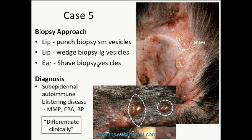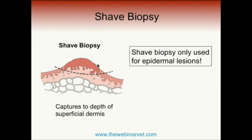The diagnosis by biopsy is a subepidermal autoimmune blistering disease, with the most likely differentials being mucous membrane pemphigoid, epidermolysis bullosa acquisita, or bullous pemphigoid in that order of commonality. The surgical biopsy confirms the class of disease, which has value — we're going to immunosuppress these patients and we want to be confident in that. But it doesn't separate the specific individual diseases; that's determined by clinical presentation, lesion type, size, distribution on the body, and signalment. Shave biopsies only capture to the superficial dermis and are only used to identify epidermal lesions.